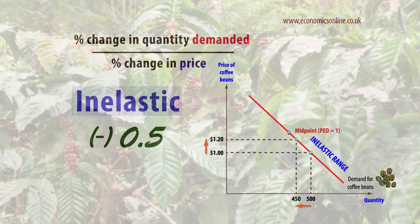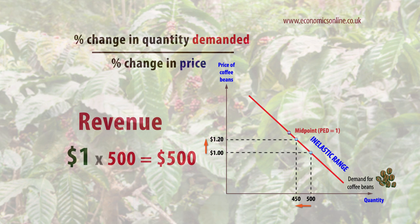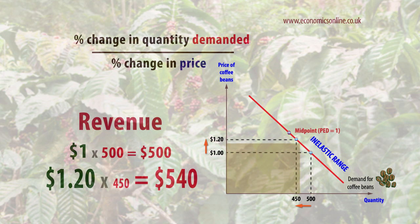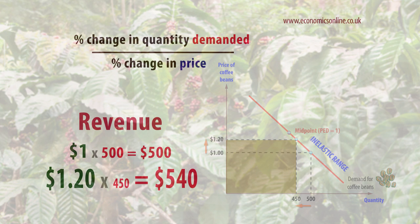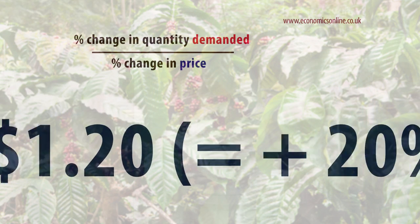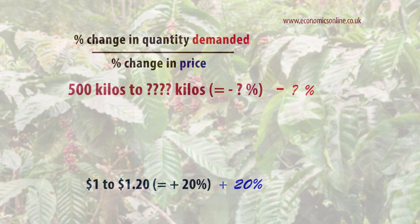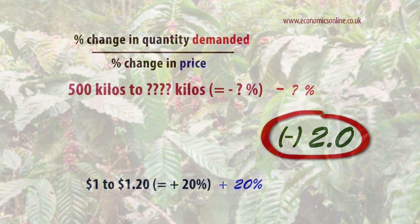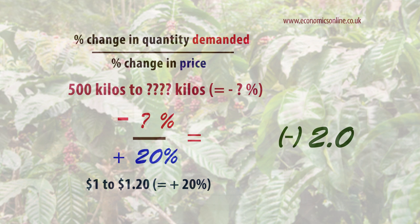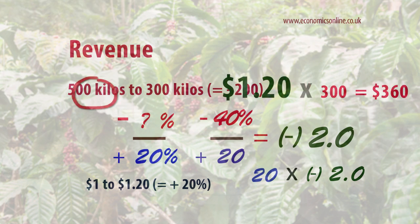The coffee grower can now estimate how revenue will be affected. Here, revenue increases from $500 to $540 because demand is inelastic. However, if PED is elastic at 2.0, demand would drop by 40% and revenue falls to $360.